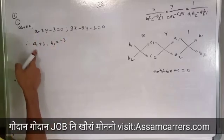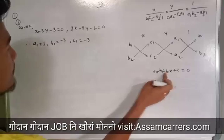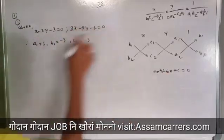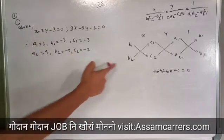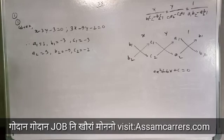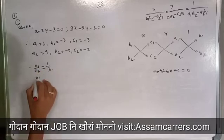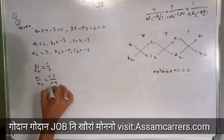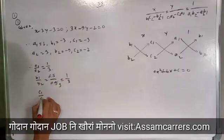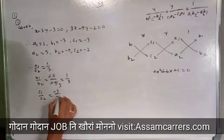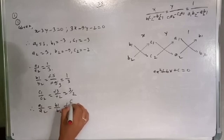So b1 equals minus 3 and c1 equals minus 3. If you compare, a2 equals 3, b2 equals minus 9, and c2 equals minus 2. Now we check: a1 by a2 is equal to 1 by 3. b1 by b2 is equal to minus 3 by minus 9, which simplifies to 1 by 3. c1 by c2 is minus 3 by minus 2.